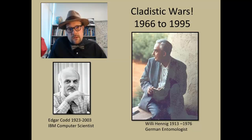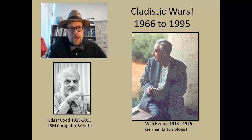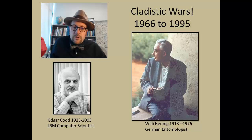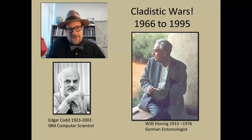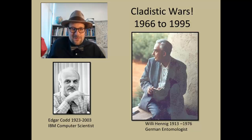From about the 1960s to the 1990s there was a period called the cladistic wars, in which scientists struggled with how to best describe and group species together. Two scientists were the initial impetus into this new way of doing things. Edgar Codd was an IBM computer scientist who developed the first relational database systems — the systems we use everywhere today on Facebook, Amazon, eBay, and when trading stocks.